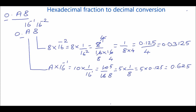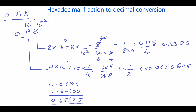Now we have to sum 0.03125 with 0.625. Adding 0.03125 plus 0.625 gives 0.65625. So the hexadecimal number 0.A8 can be written as 0.65625 base 10.